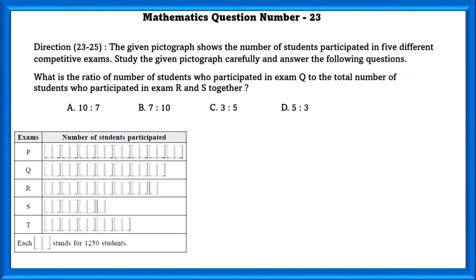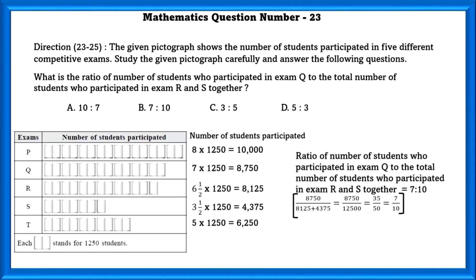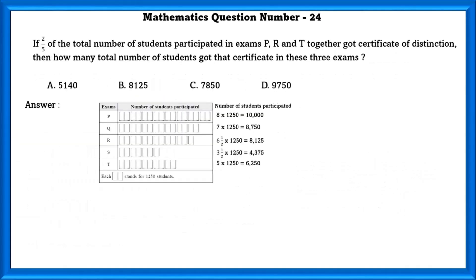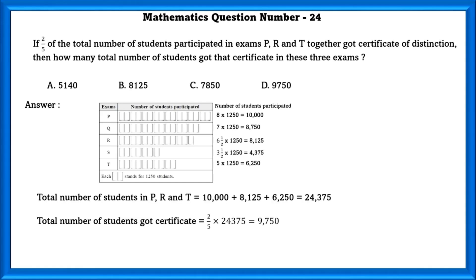Mathematics question number 23. The given pictograph shows the number of students who participated in 5 different competitive exams. The ratio of students who participated in exam Q to the total number of students who participated in exams R and S together is 7 to 10. If 2/5 of the total number of students who participated in P, R and S together got a certificate of distinction, the number of students who got the certificate is 2/5 × 24,375 = 9,750.